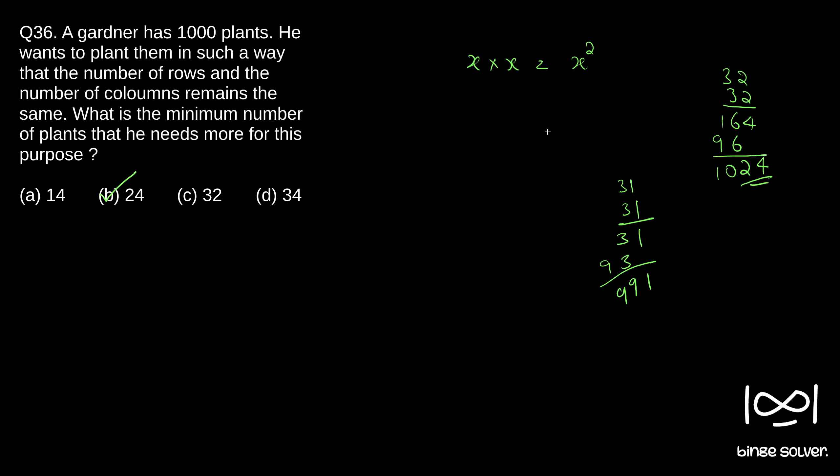So why 32? I took 32 because 30 square is 900, so it will be either 31 or 32. I just checked both. So in case if you know the perfect squares of these, then you don't need to calculate all this. But yeah, solution to question 36 is B.